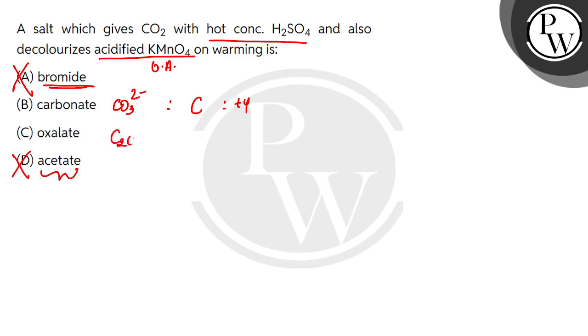Oxalate is C2O4^2-. If we calculate carbon oxidation state, it will be +3. That means it can be oxidized further. So if carbonate cannot be oxidized, it will not be decolorized by acidified KMnO4. So option B is ruled out. Only option C will be correct.